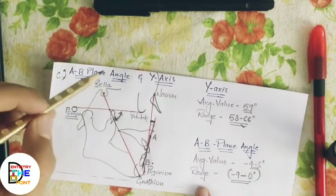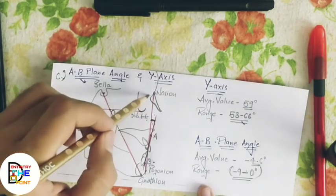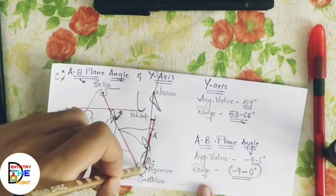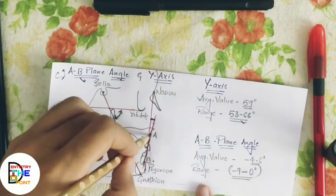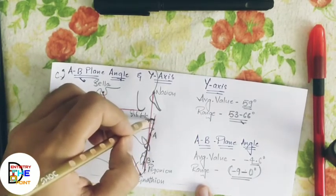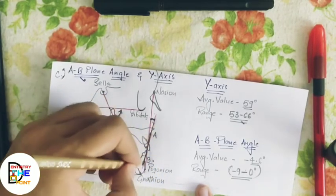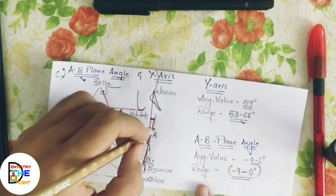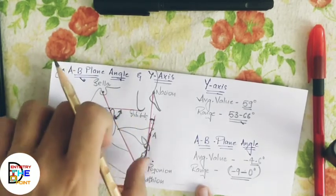The fourth skeletal parameter is the AB plane angle. The first line is drawn from nasion to pogonion (the N-Pog line) and the second line is drawn from Point A to Point B. The angle where these two lines cross is the angle of Point A to Point B in relation to the facial plane.